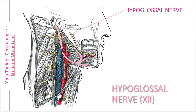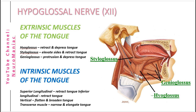The extrinsic muscles that are innervated include the hypoglossus, genioglossus and styloglossus. Whereas the intrinsic muscles include the superior longitudinal, inferior longitudinal, vertical and transverse muscles of the tongue.